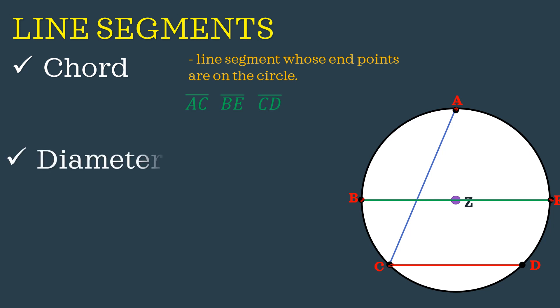Aside from chord, the next term, which is also a line segment, is called the diameter. The diameter is also a chord, but this time it passes through the center. So from the first three chords shown, one of those is a diameter — our line segment BE — because it managed to pass through or intersect the center of our circle.